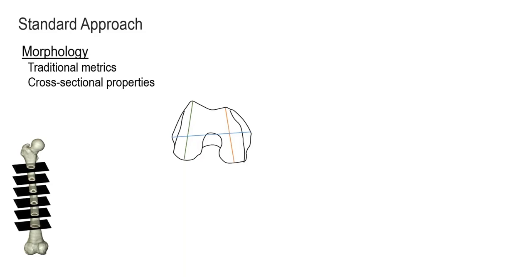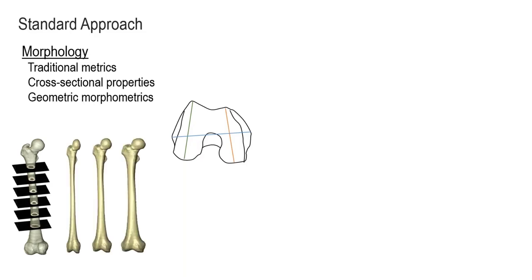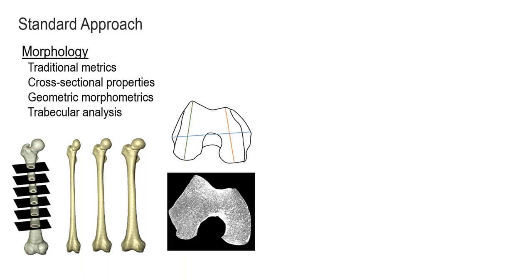Researchers also look at cross-sectional properties — how bone is distributed through the shaft, especially in long bones, to tell us something about bending rigidity and reveal something about behavior. Geometric morphometrics — the statistical analysis of biological shape — has become really well developed in the last couple of decades, giving us great tools to quantify biological shape. And most recently, at least in my field, trabecular bone analyses examine whether the trabecular structure within the joints of long bones will reveal something about an animal's locomotion.